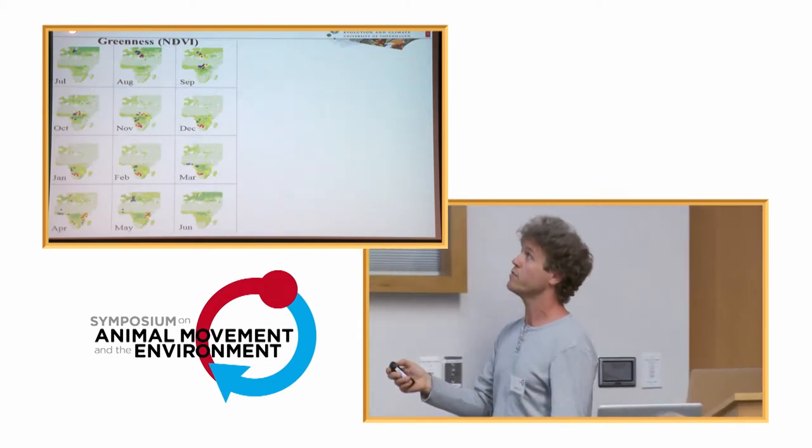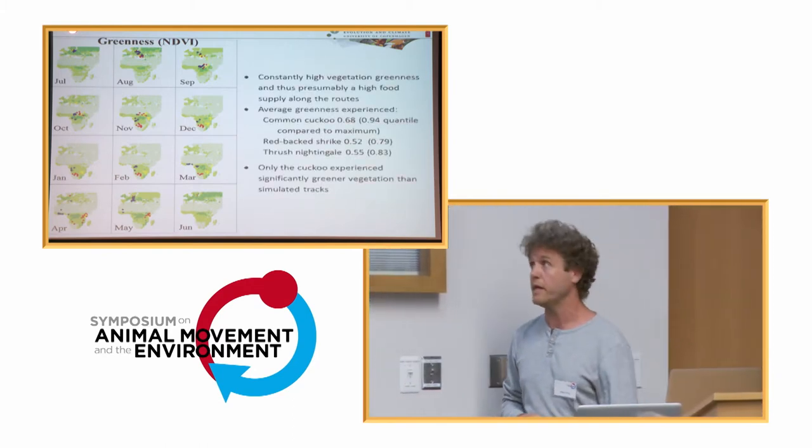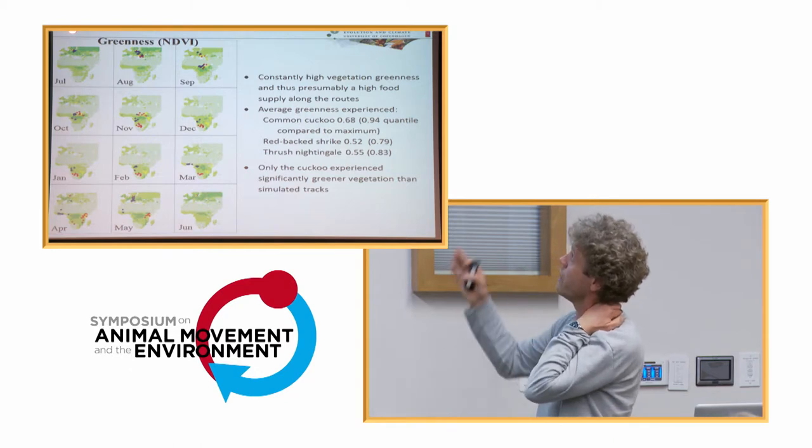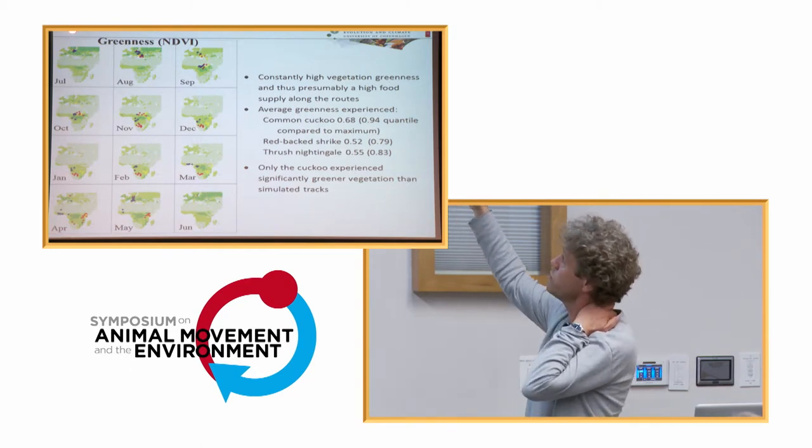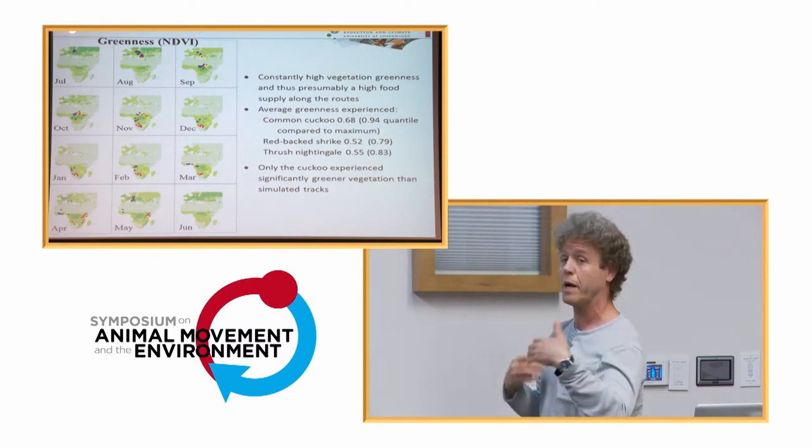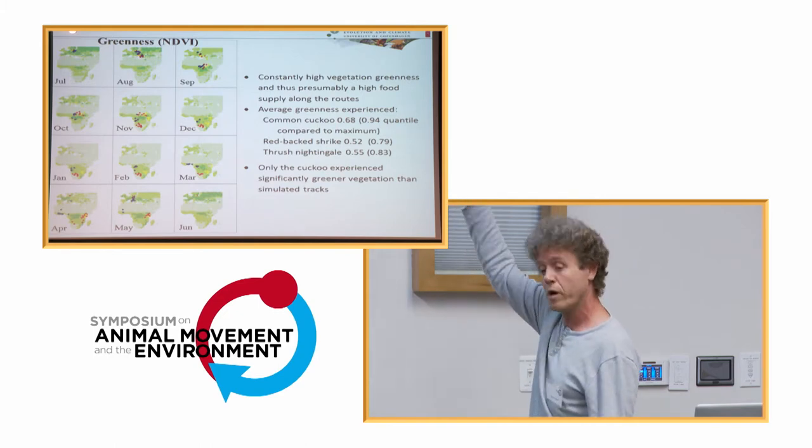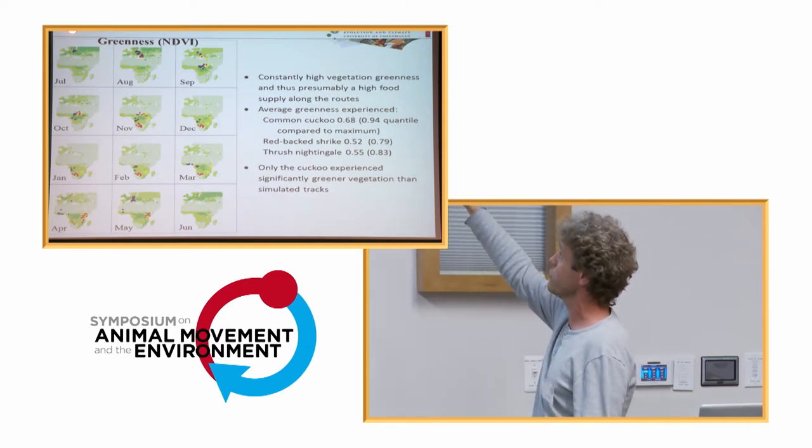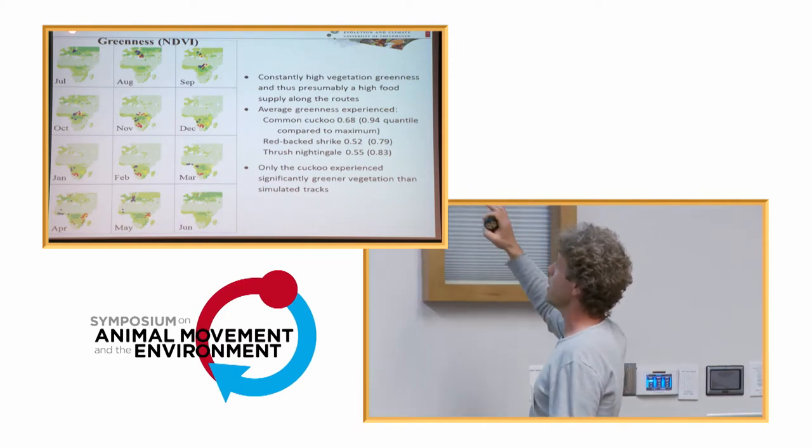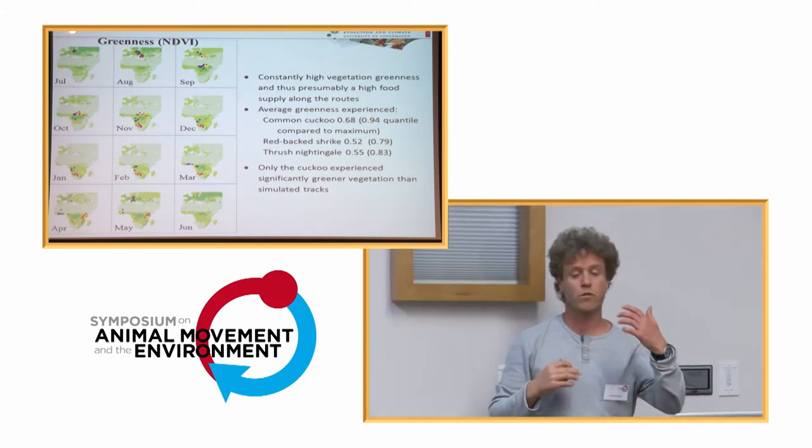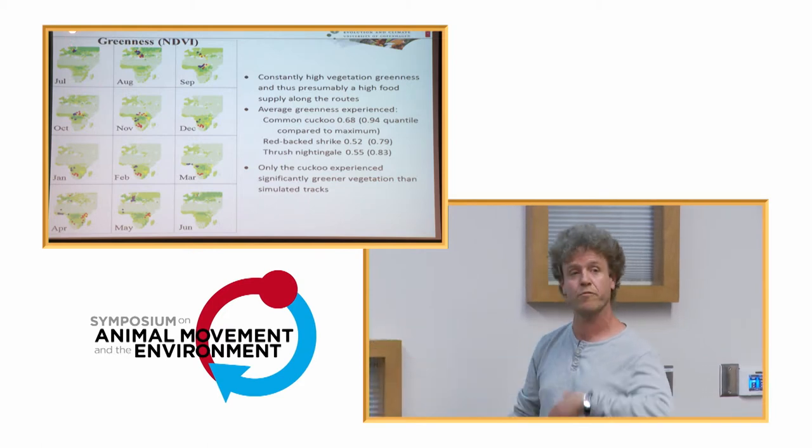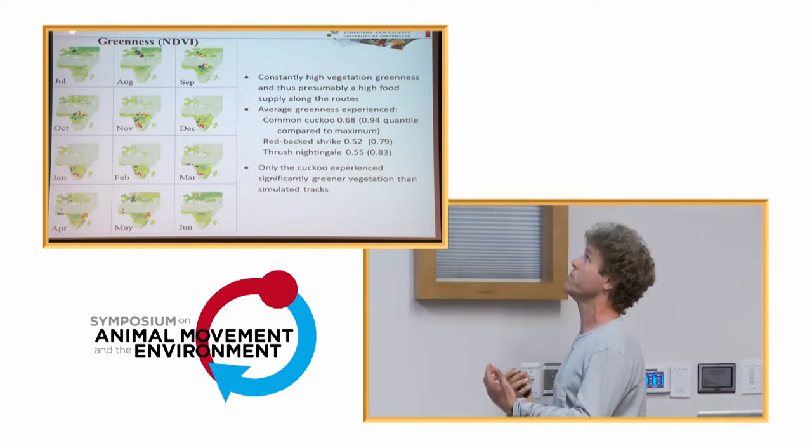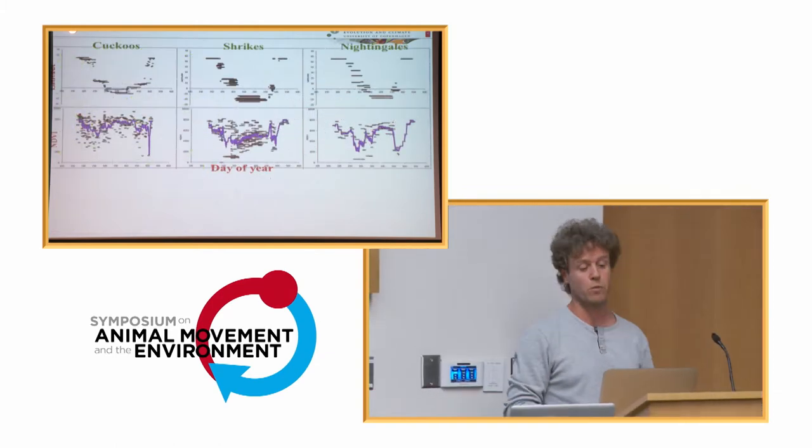Anyways, if we try now, plot this on these NDVI maps, the monthly NDVI. If we look now, we can see there's constantly high vegetation greenness, and that's presumably a high food supply along the routes. The average greenness experienced for the common cuckoos is 0.68, which is 0.94 quantile compared to the maximum that they could, if they could go wherever in this area they would. For the red-backed shrikes, it's only 0.52, which is the 79th percentile quantile, and the thrush nightingale is 0.55, which is the 83rd percentile quantile. So actually, if we sort of simulate this with some restriction as to that they can't go anywhere, they can't go from Europe to South Africa and back sort of the next any two weeks, then if we constrain that, only the cuckoo experiences a significant degree of vegetation in simulated tracks. So just following maximum greenness is not a good explanation.